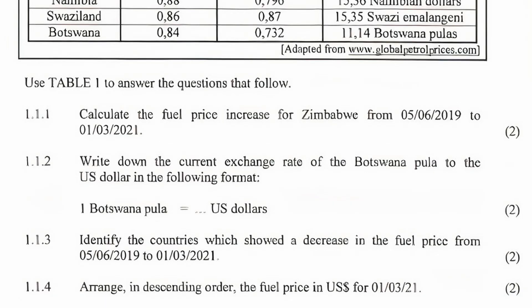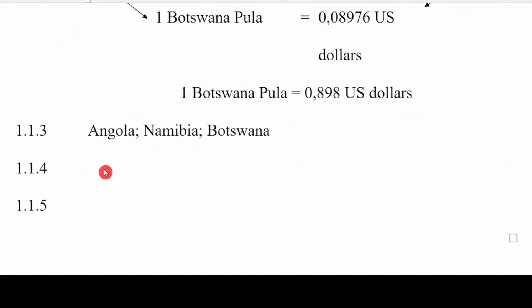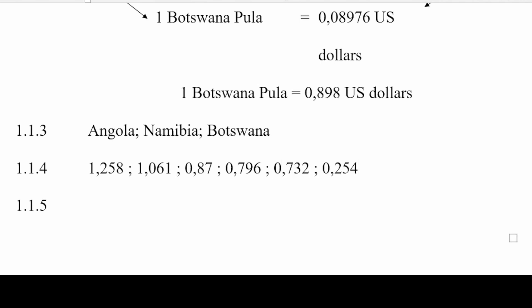Question 1.1.4 asks us to arrange in descending order the fuel prices in US dollars for the 1st of March 2021. Descending order means from highest to lowest. From column 2B, the order is: 1.258, then 1.061, then 0.87, then 0.796, then 0.732, and finally 0.254.